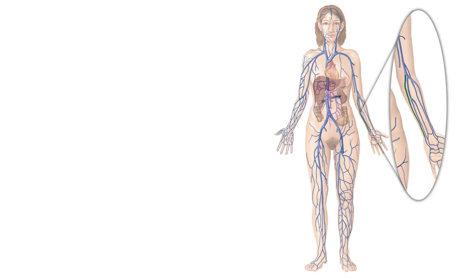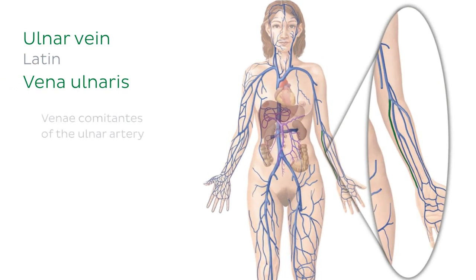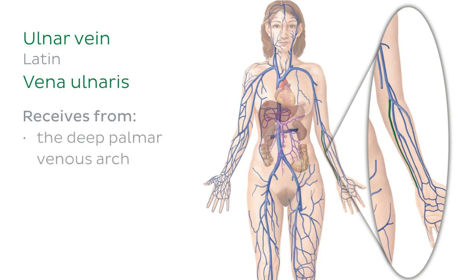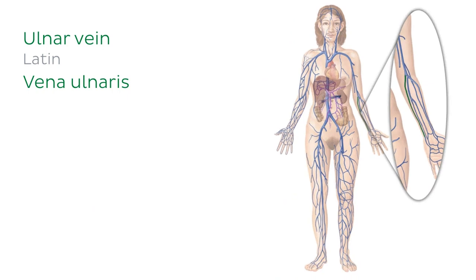On the inner side of the forearm are the ulnar veins, highlighted in green. These veins are larger than the radial veins and are the venae comitantes of the ulnar artery. The ulnar veins receive venous blood flow from various sources: tributaries from the deep palmar venous arch, branches from the veins draining the anterior and posterior interosseous muscles close to the elbow, and a large communicating branch from the median cubital vein. The ulnar veins join with the radial veins at the anterior cubital fossa — the pit of your elbow — to form the brachial veins in the upper arm.